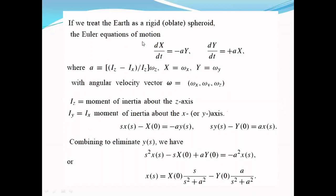The Euler equations of motion are given by dX/dt = -aY and dY/dt = +aX, where a = (Iz - Iy)/Iz·ωz.